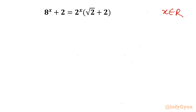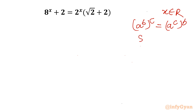Let us begin by considering one exponent property which states that (a^b)^c = (a^c)^b. So in place of 8^x we can write it as (2³)^x, and then applying this property it becomes (2^x)³.